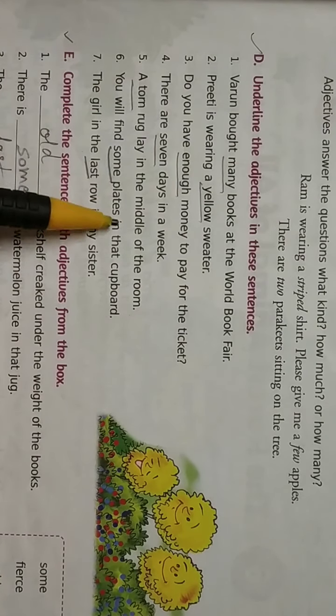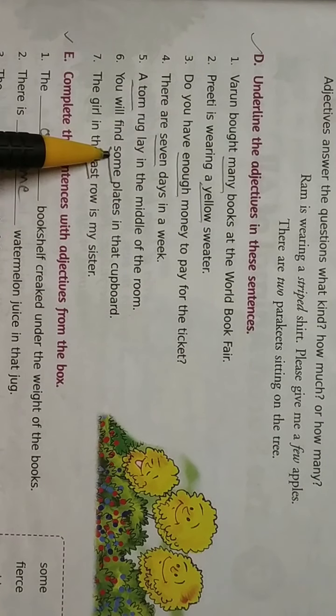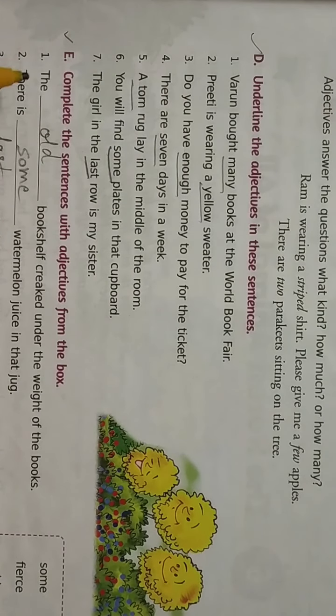You will find some plates in that cupboard. Now where is the noun? Plates. What is told about this noun? Some. So some is your adjective. The girl in the last row is my sister. Noun is row. What is told about row? Last. So last is your adjective.